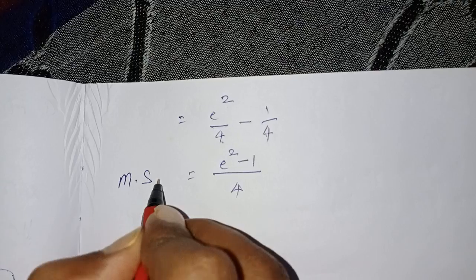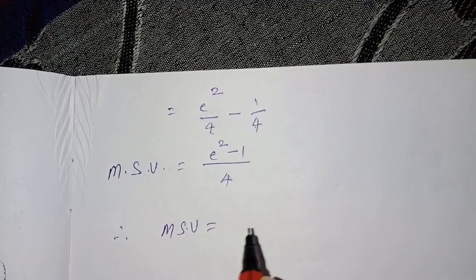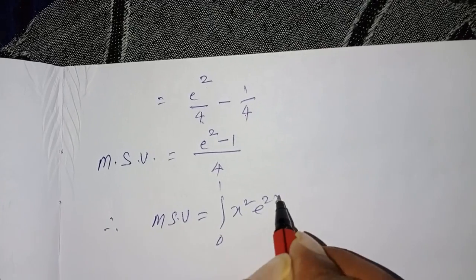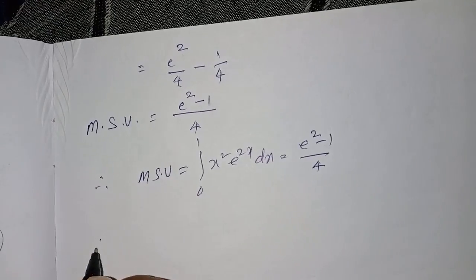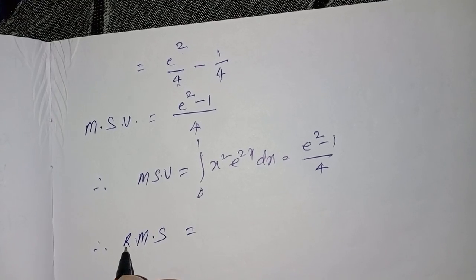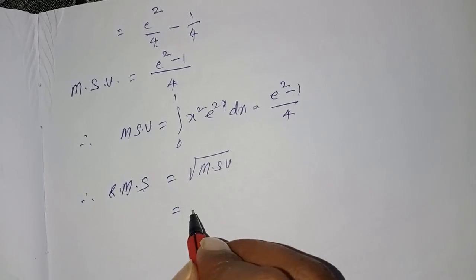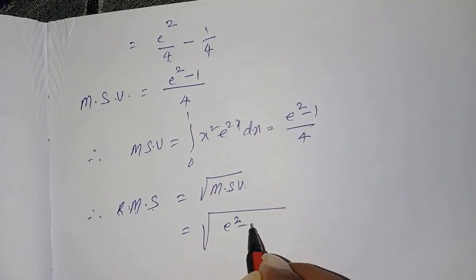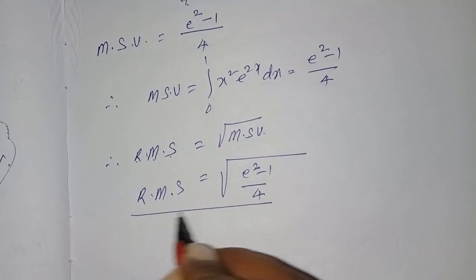Therefore MSV = ∫[0 to 1] x²·e^(2x) dx = (e² − 1)/4. Since we need RMS = √(MSV), the RMS value is √((e² − 1)/4). This is the RMS value of the given function y = x·eˣ over [0, 1].